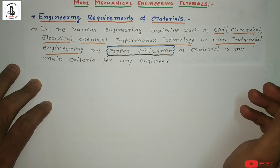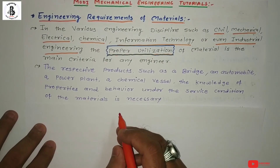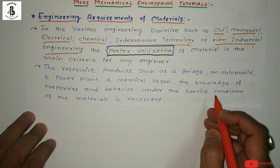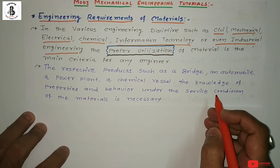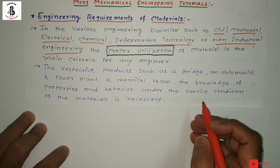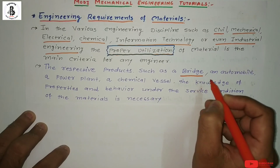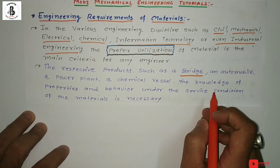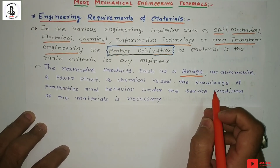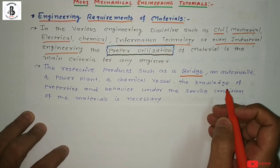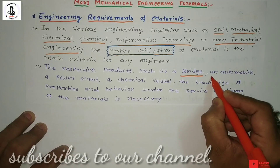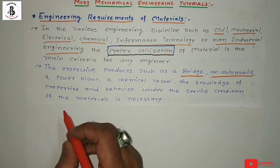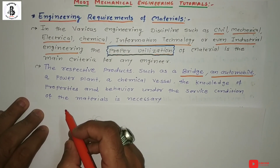The requirements come from the customers. Various applications are correlated with different branches of Engineering. For example, Bridges are for Civil Engineers — we select materials that will have good performance for the required life of the bridge. For Automobiles, we select materials according to requirements of weight, performance, and durability.